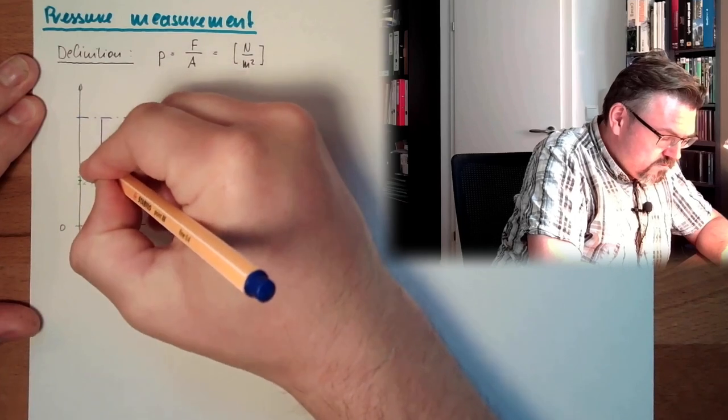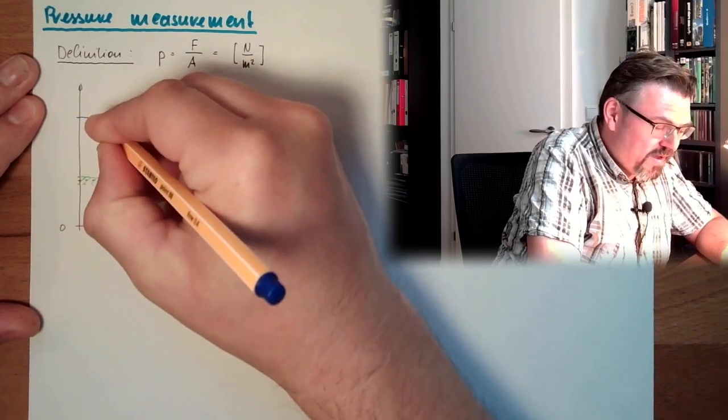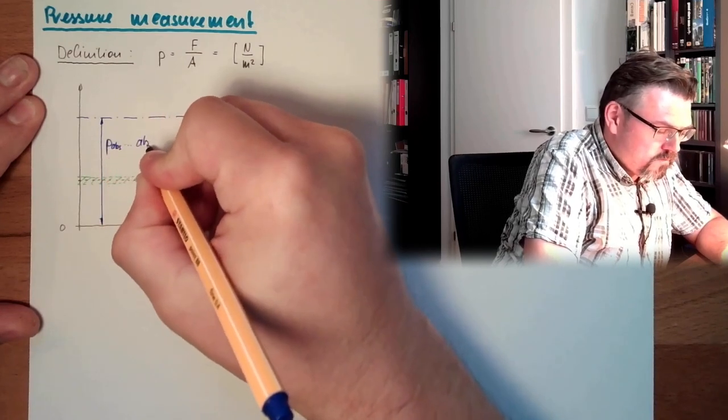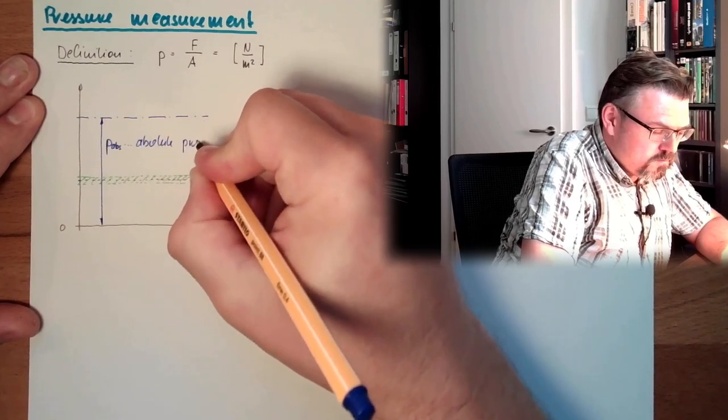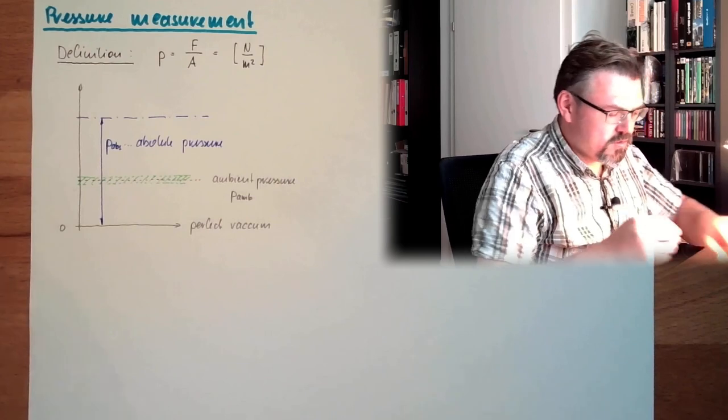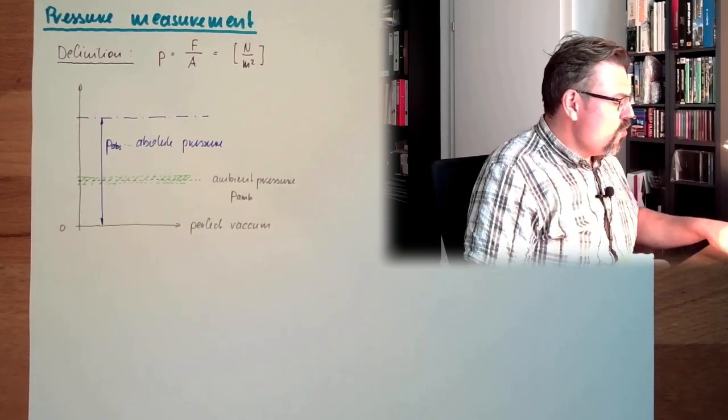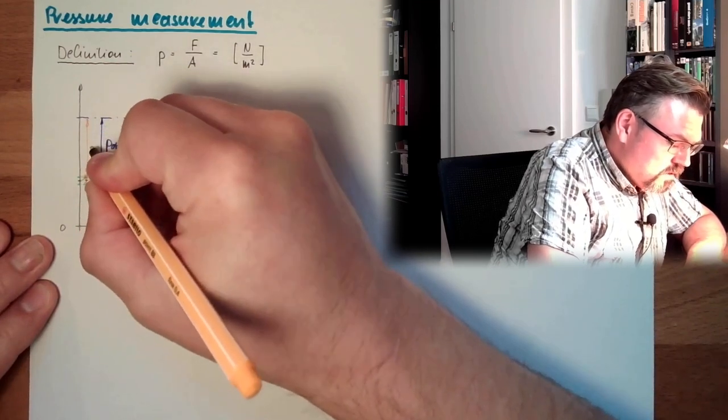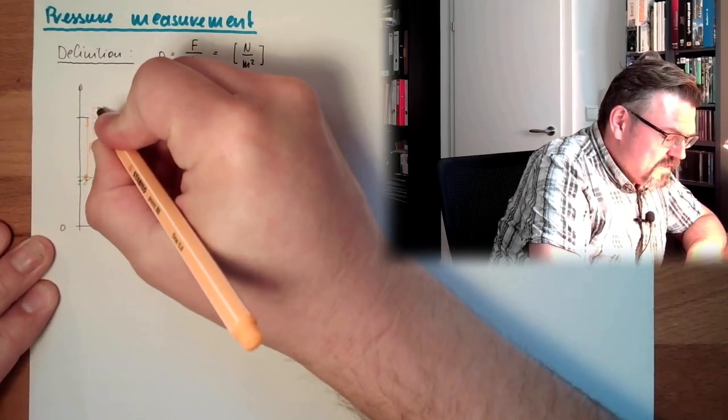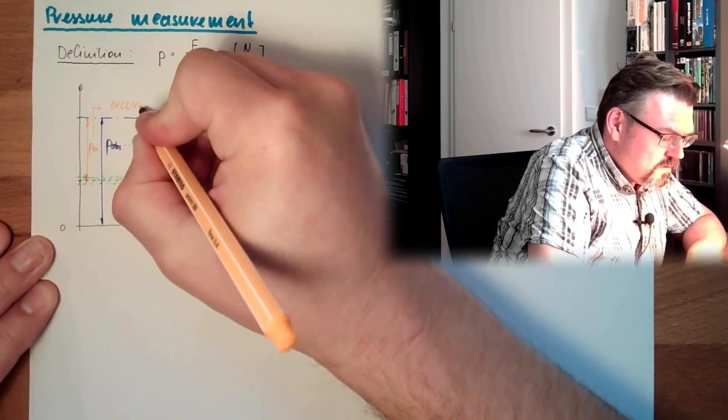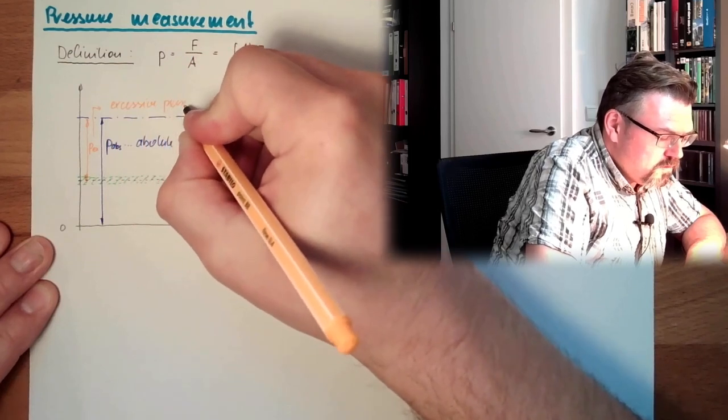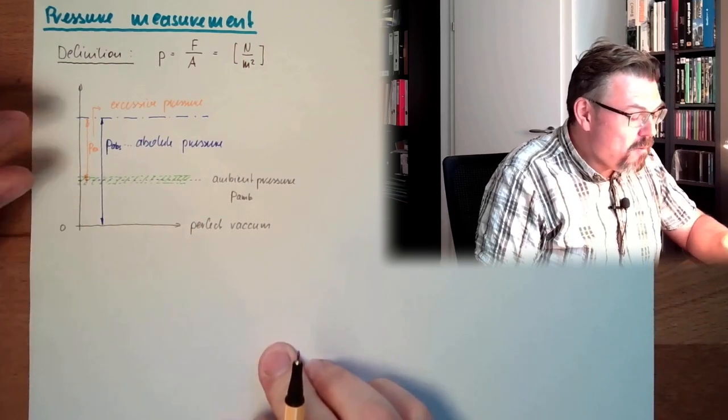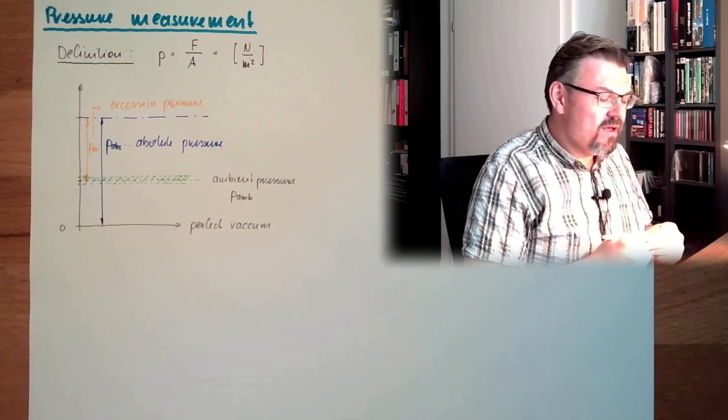So let's say we have here a certain pressure level we want to give. Then this here, compared to the absolute vacuum, is the absolute pressure. And then we also have here this difference Px, the excessive pressure, so the pressure we add to the ambient pressure. The ambient pressure plus the excessive pressure gives the absolute pressure.